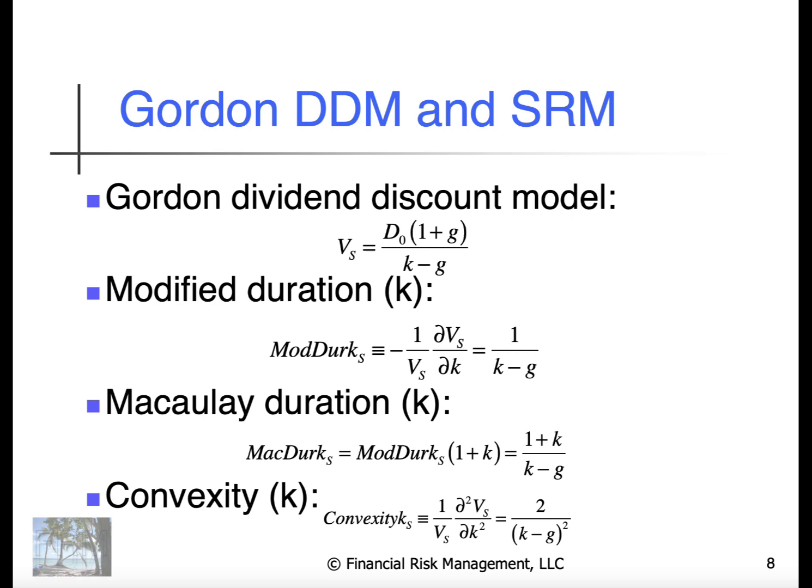We can compute the modified duration as 1 over K minus G. Macaulay's duration is just modified duration times 1 plus K. And convexity is simply 2 divided by K minus G squared.